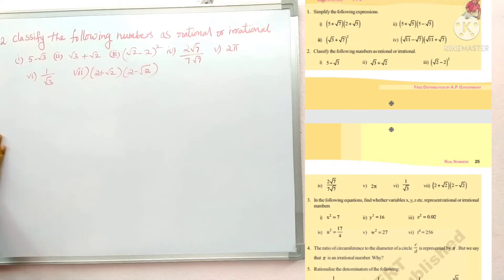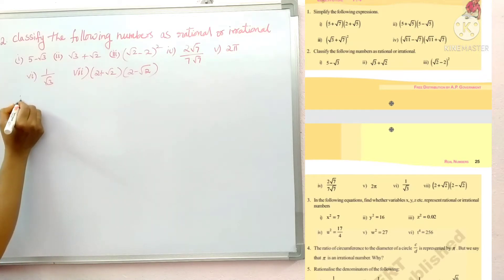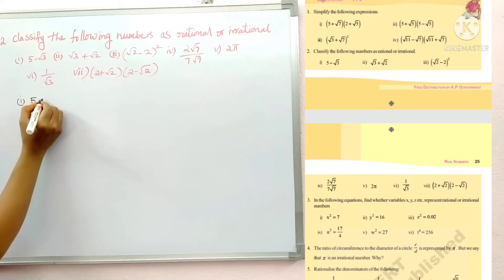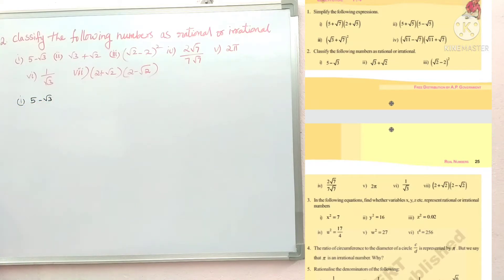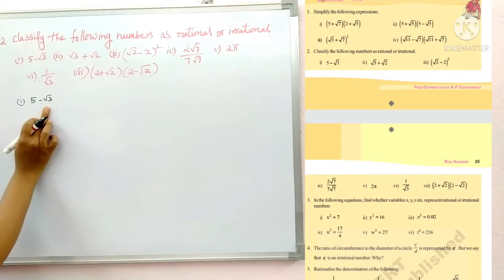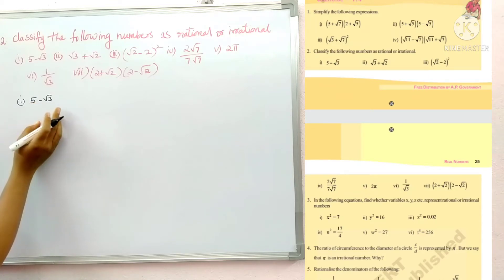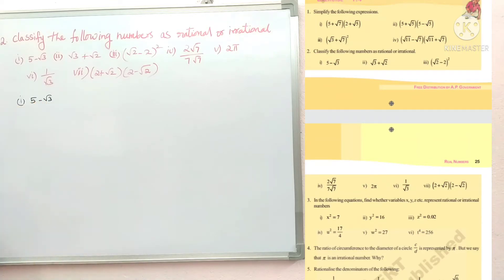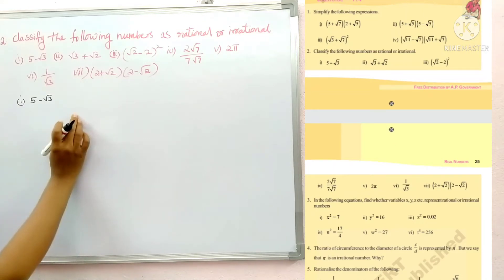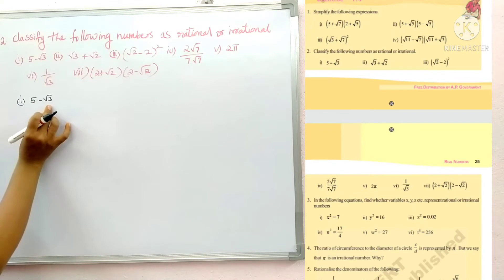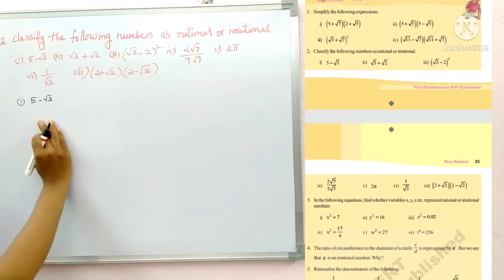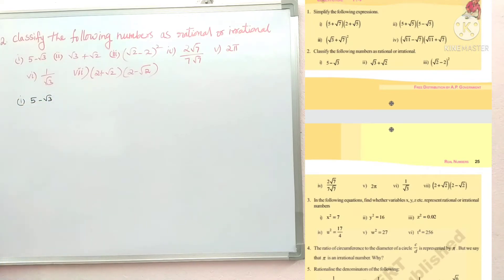The first problem is 5 minus root 3. Root 3 is an irrational number, and so after subtracting root 3 from 5, it is also an irrational number. Subtracting an irrational number from a rational number gives an irrational result.